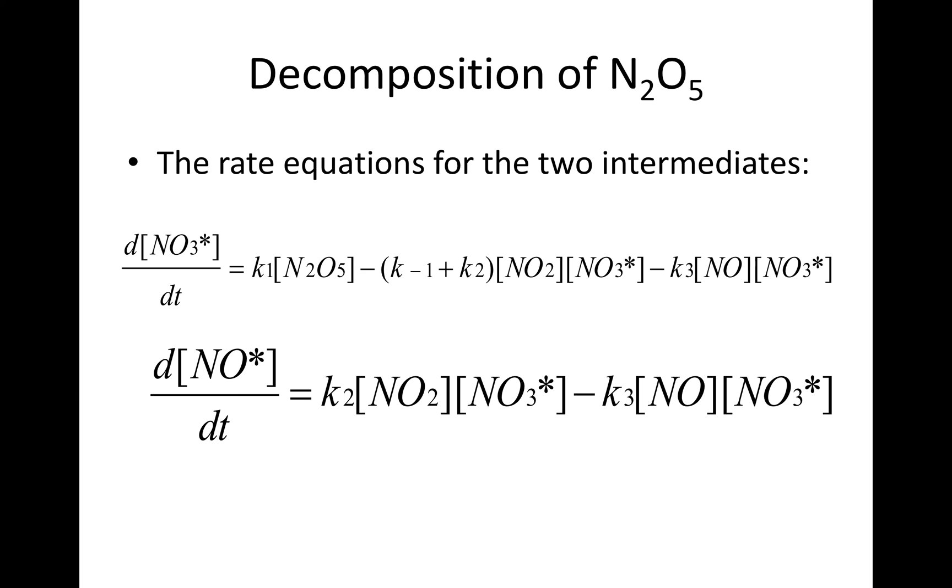Therefore d[NO₃*]/dt = k₁[N₂O₅] - (k₋₁+k₂)[NO₂][NO₃*] - k₃[NO][NO₃*]